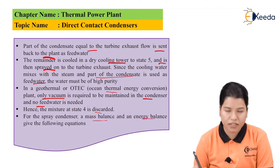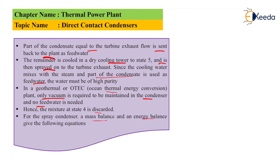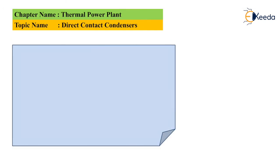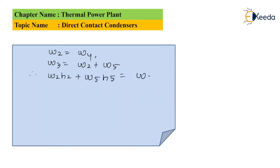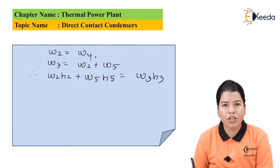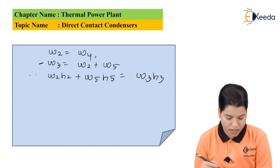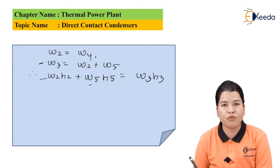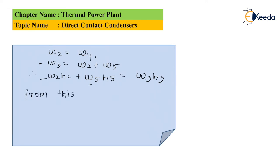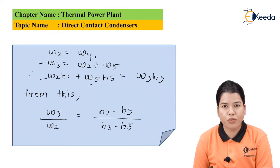For spray type condensers, a mass balance and energy balance can be given by the following equations. w2 is equal to w4; similarly, w3 is equal to w2 plus w5. Hence, w2·h2 plus w5·h5 is equal to w3·h3. From this equation we can write: w5 divided by w2 is equal to (h2 minus h3) divided by (h3 minus h5) — this is equation number one.